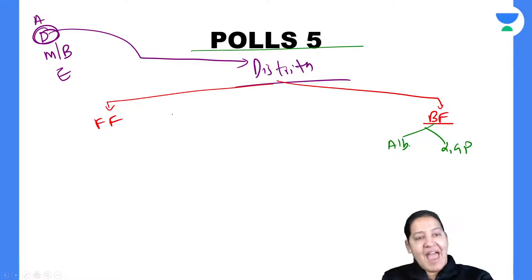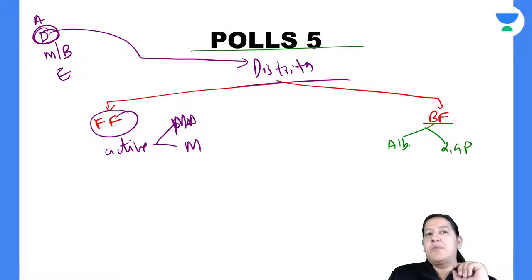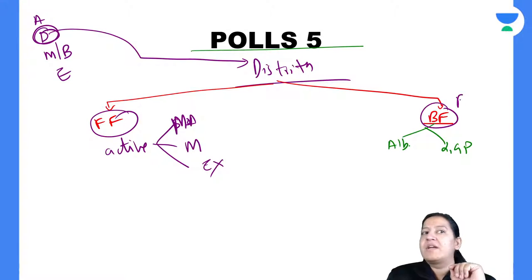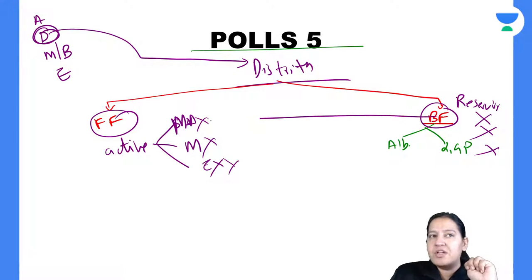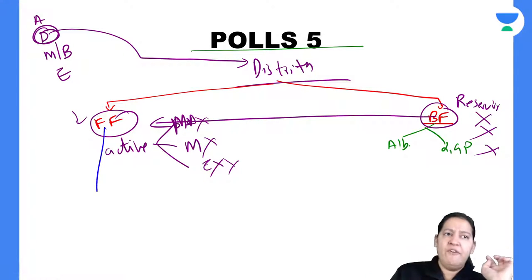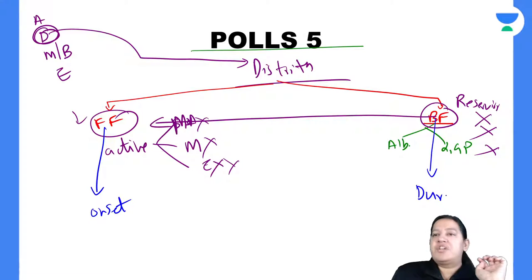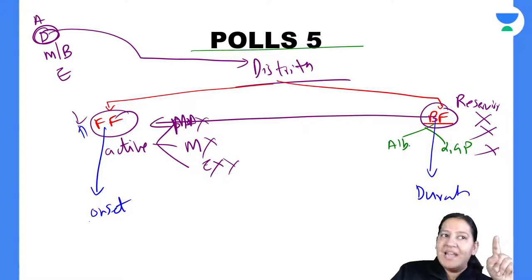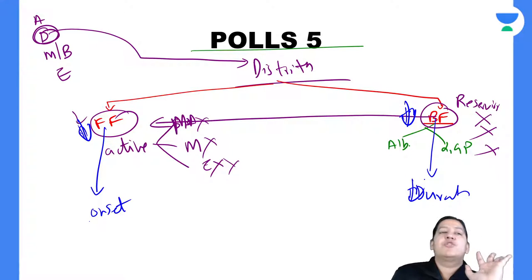Free form decides the onset of action and bound form decides the duration of action. More free form means faster onset; more bound form means more duration. There are diseases in which albumin decreases — nephrotic syndrome — so bound form decreases, free form increases, causing toxicity. You have to reduce the dose. There are diseases in which alpha-1 glycoprotein increases due to acute phase reactions — so more bound form of basic drugs, less free form, less action — you have to increase the dose.